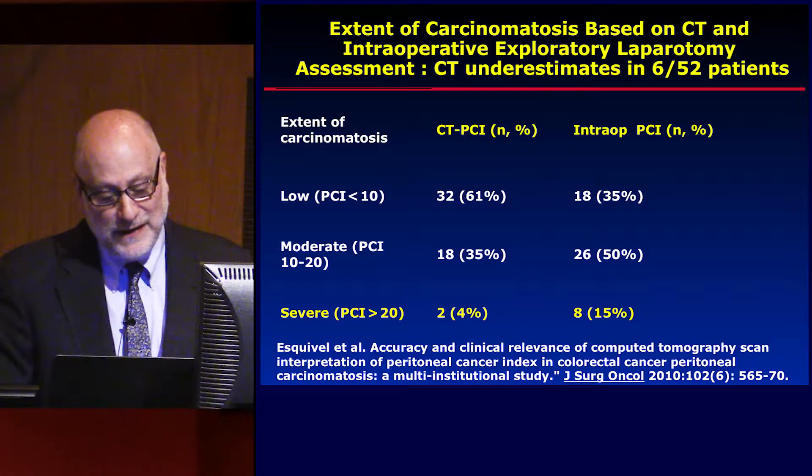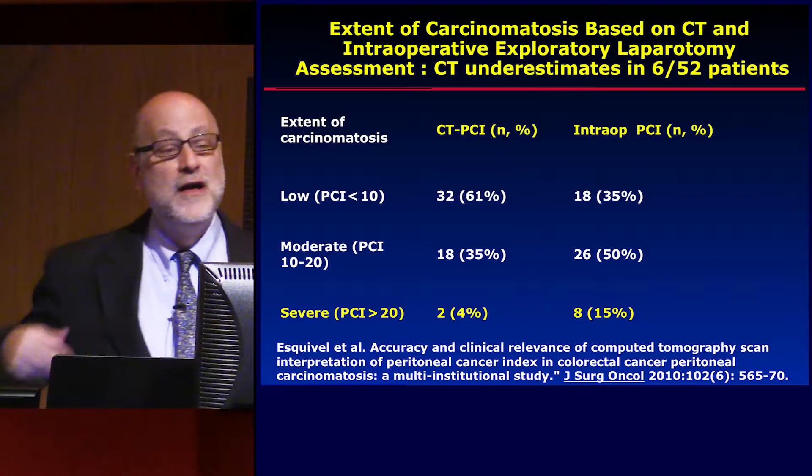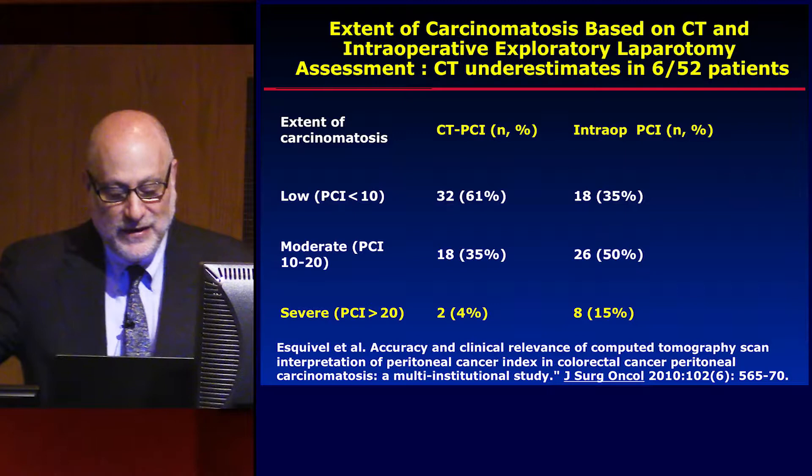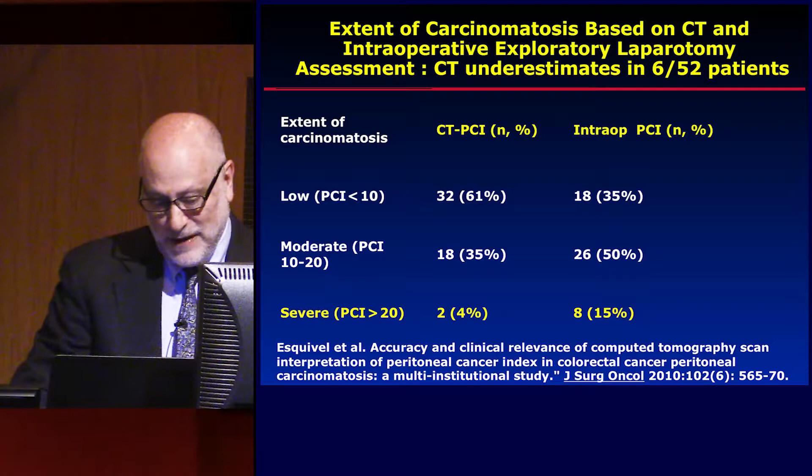This is a study that showed some of the limitations of CT. I don't want to dismiss CT — I realize it's one of the initial studies done when patients present with signs or symptoms. But if there is mucinous ascites, sometimes six of 52 patients will be understaged. In this series where eight patients intraoperatively had a PCI index greater than 20, CT prospectively only identified two of those eight patients.